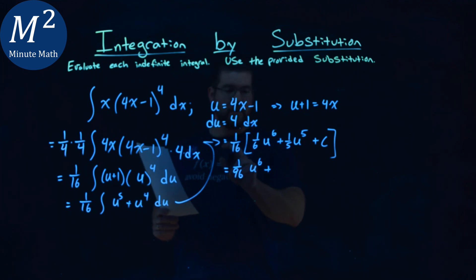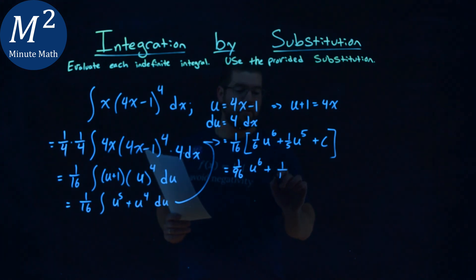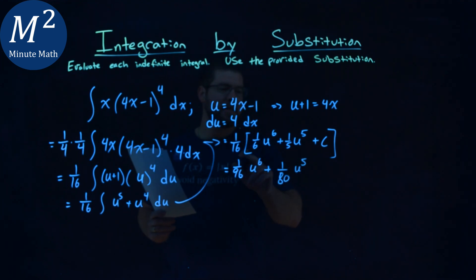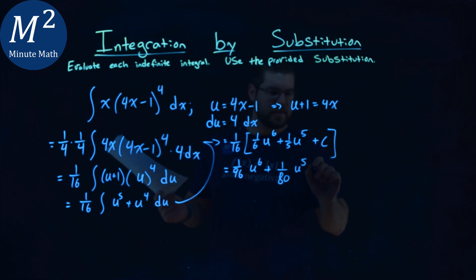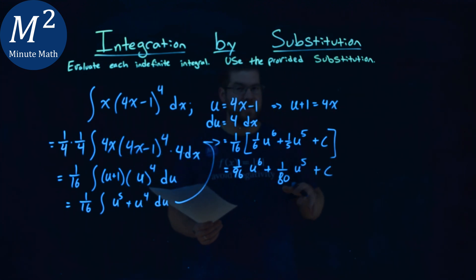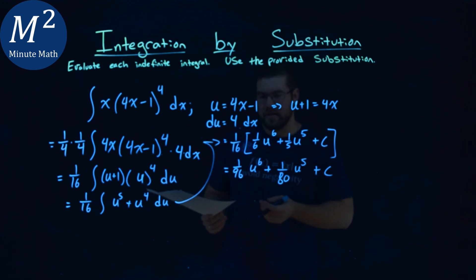Now, we have a positive, 1/16th times 1/5th is a positive 1/80th, u to the 5th power. And then 1/16th times a constant c is like c over 16th, but it's just some constant. So we don't really care about that constant, we just know it's a constant. So plus c right there.